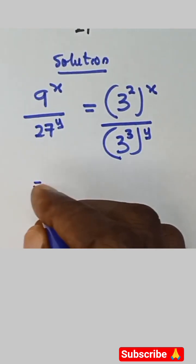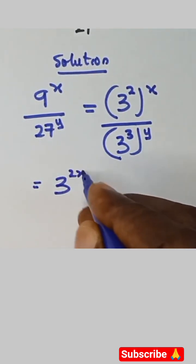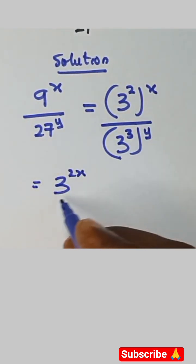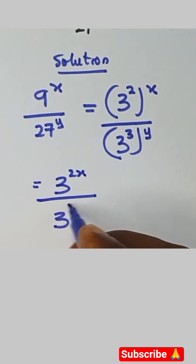Now let's move on. This can be written as 3 raised to power 2x over 3 raised to power 3y, since 2 times x gives us 2x and 3 times y gives us 3y.